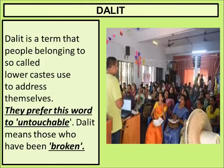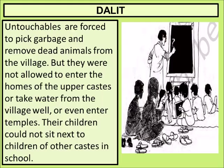Next is 'Dalit.' Dalit is a term that people belonging to so-called lower castes use to address themselves, and it means 'untouchable' or 'broken.' In Indian society, lower-caste people face a great deal of discrimination. Untouchables were forced to pick garbage and remove dead animals from the village, but were not allowed to enter the homes of upper-caste people, take water from the village well, or even enter temples. Their children could not sit next to children of other castes in school — as you can see in this picture, the Dalit children are sitting behind the upper-caste children.